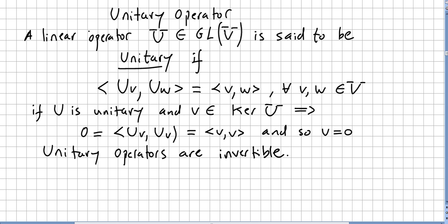Some remarks about unitary operators. If U is a unitary operator and v is in the kernel of U, that implies the inner product ⟨Uv, Uv⟩ is zero, meaning ⟨v, v⟩ equals zero — by the property of inner products — and therefore v equals zero. Since v in the kernel implies v equals zero, unitary operators are invertible.